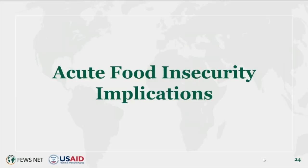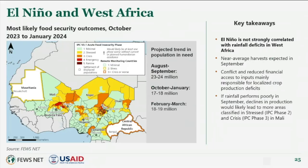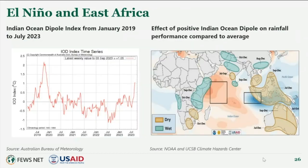Moving on to acute food insecurity implications in regions where FEWS NET works: in West Africa, the El Niño signal is not all that strong, and as a consequence we're expecting near-average harvests. The main driver of poor production where it does occur is conflict and reduced financial access to necessary inputs.